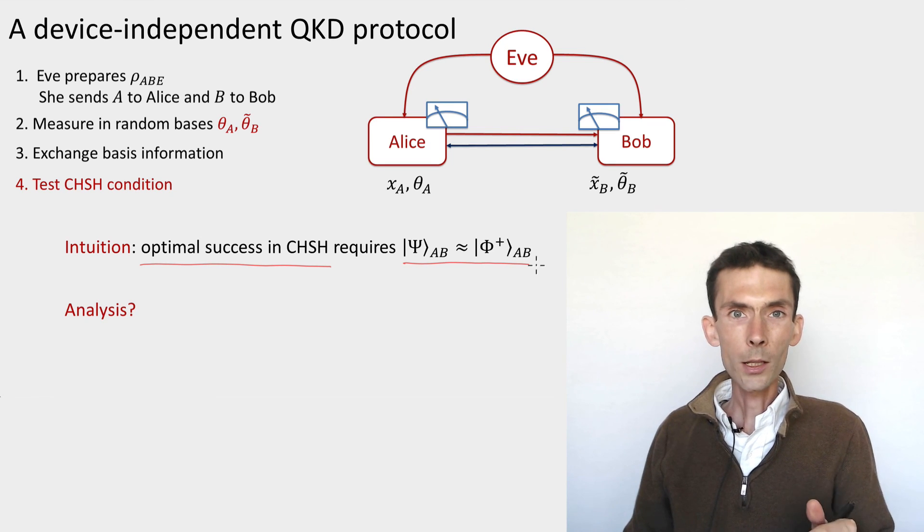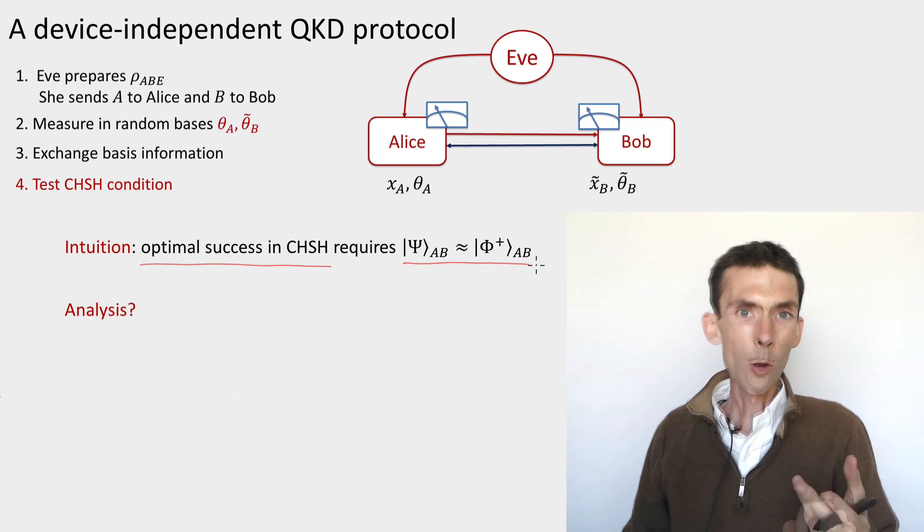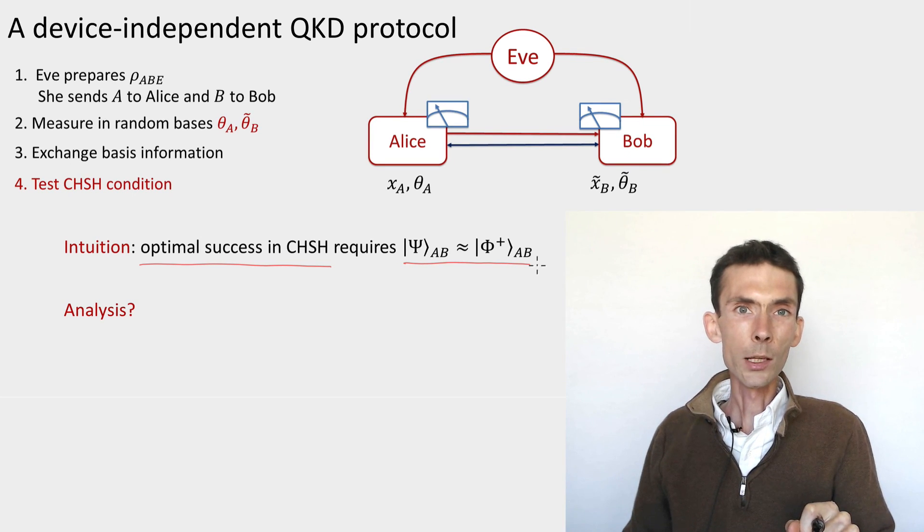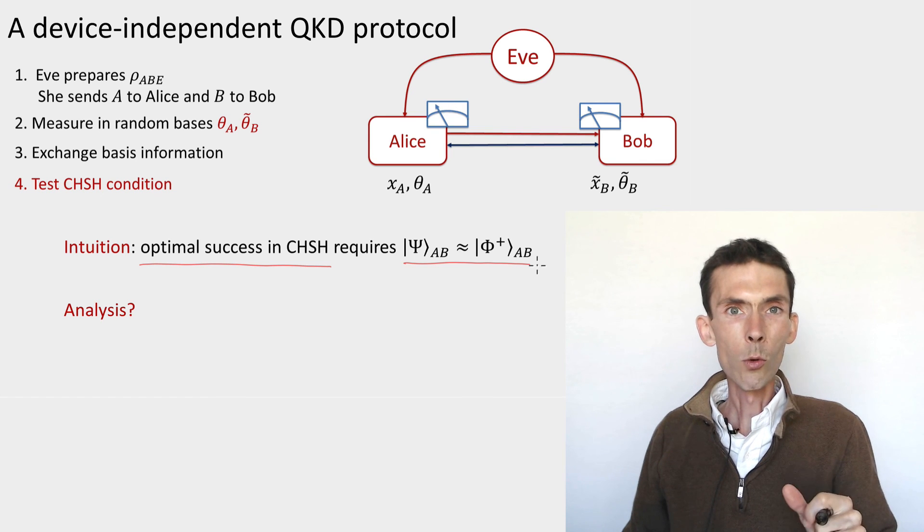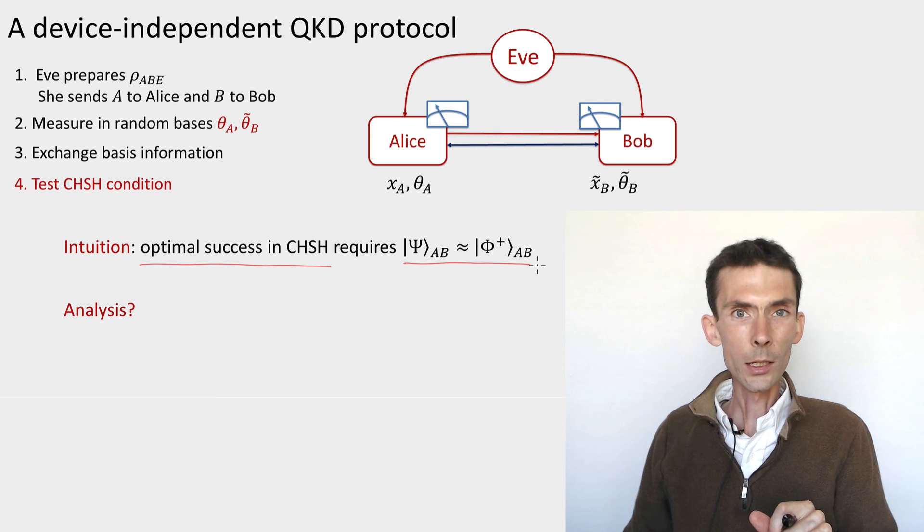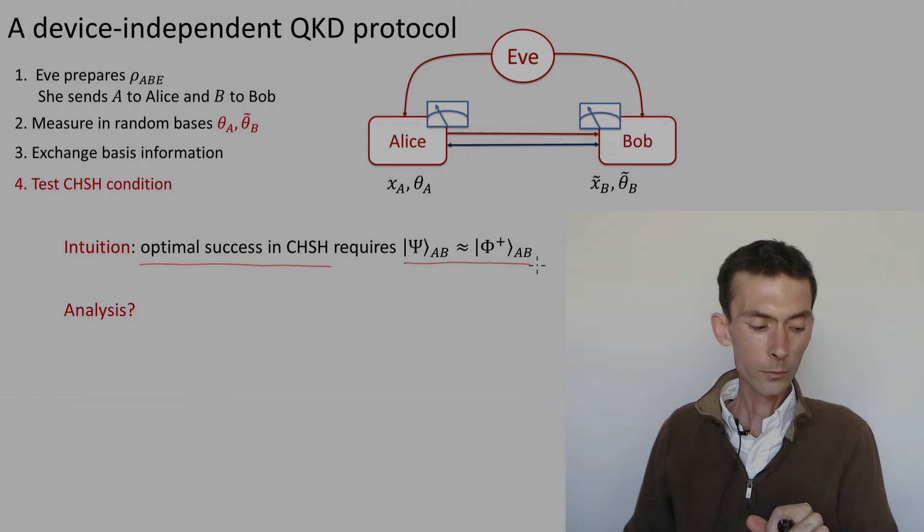And so now this is exactly what's left for us to do. We need to analyze another variant of the tripartite guessing game in which Alice and Bob perform a CHSH test in their devices and they don't know what measurements they're performing. So let's look at that new tripartite guessing game in the next video module.